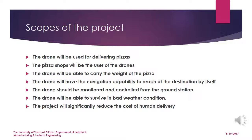The drone will have automatic navigation capability so that it can reach the destination by itself and come back to the pizza shop without any problem. The drone will also be able to sustain in bad weather conditions, and it will have a communication system so that we can send signals to the drone and operate it from the ground station.